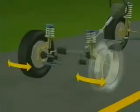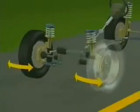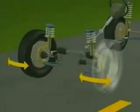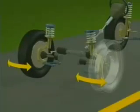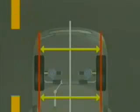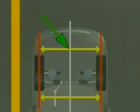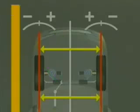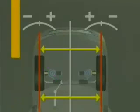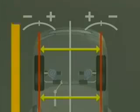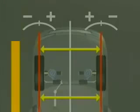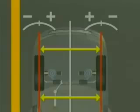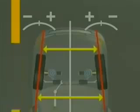The most critical alignment angle is total toe on the steering axle. Excessive positive or negative toe will cause scuffing and wear on the shoulders of the tires. Total toe is defined as the difference in distance measured across the front of the tires compared to the distance measured across the rear of the tires, and is measured in inches or millimeters. Total toe may also be defined as an angular measurement in degrees or in degrees and minutes. Toe is positive, or toe-in, when the front of the tires are closer together than the rear of the tires.